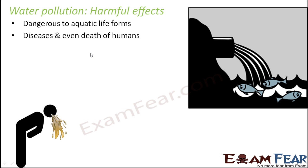Polluted water can also cause disease and even death in humans, because human beings and other animals consume water directly or indirectly. If the water is contaminated, it can cause many severe diseases — for example, cholera and typhoid, which are waterborne diseases. That's why people are advised not to drink water from unhygienic places, as the water might contain harmful chemicals. In severe cases, this can even lead to death.